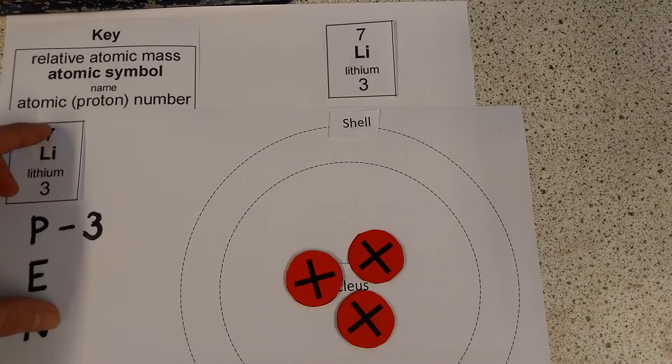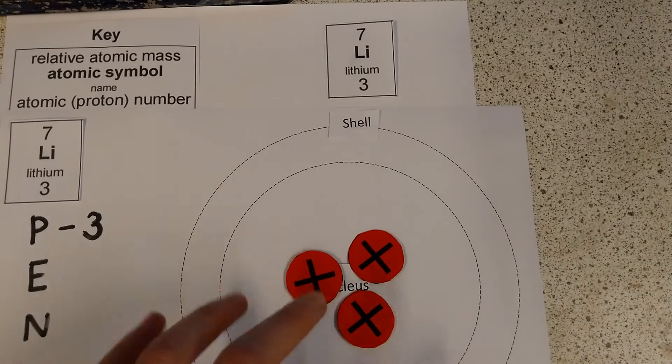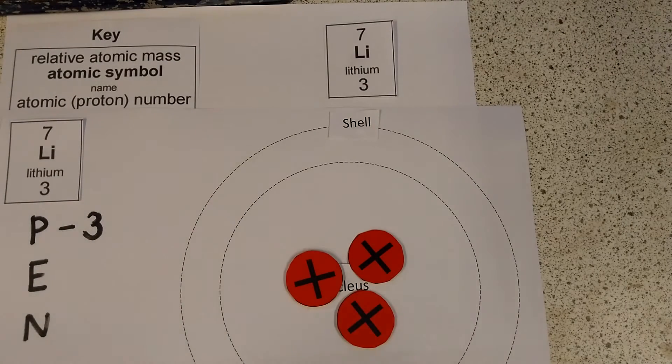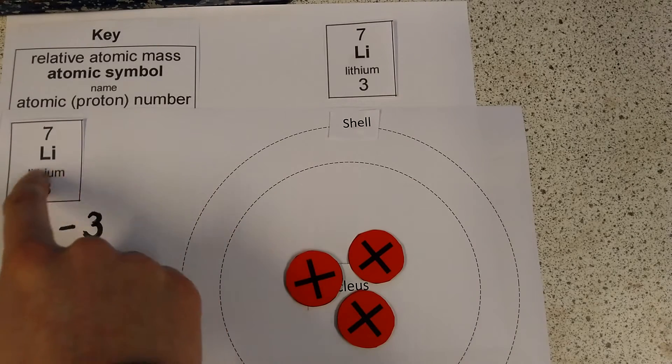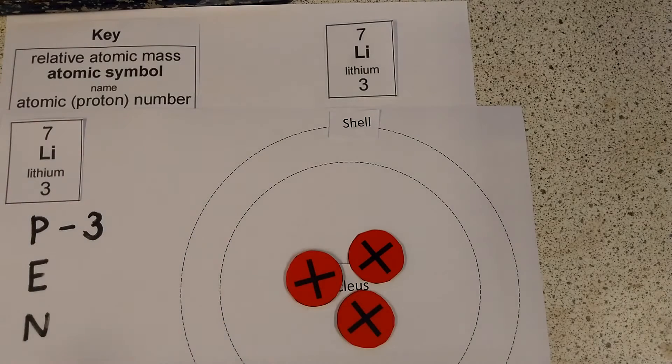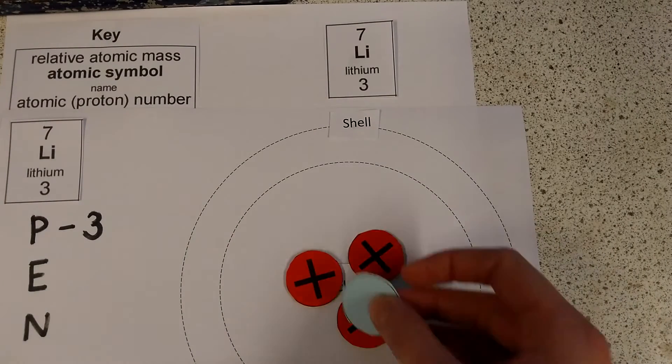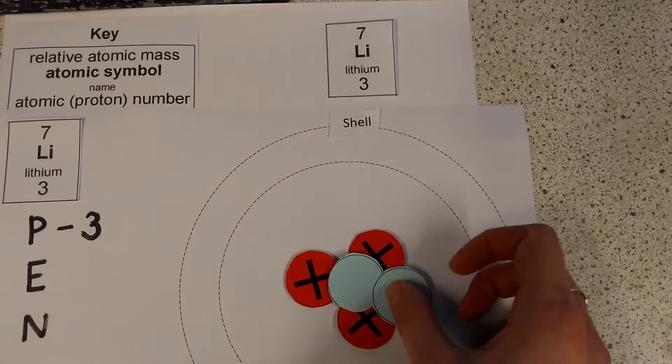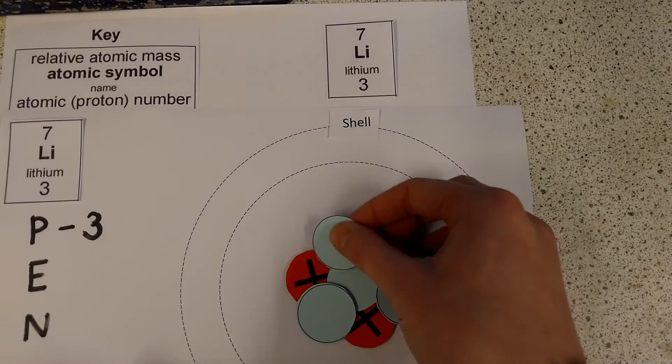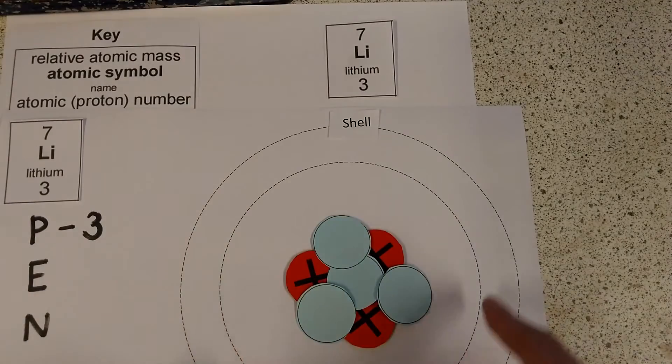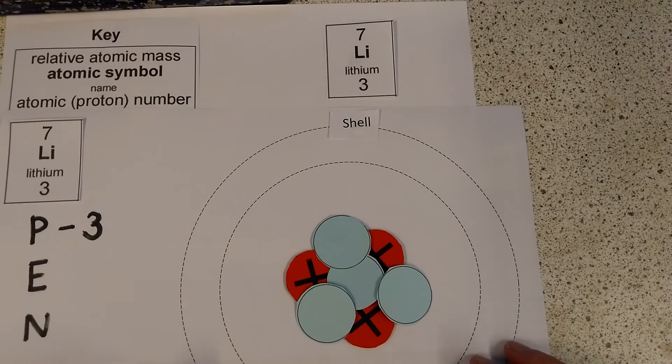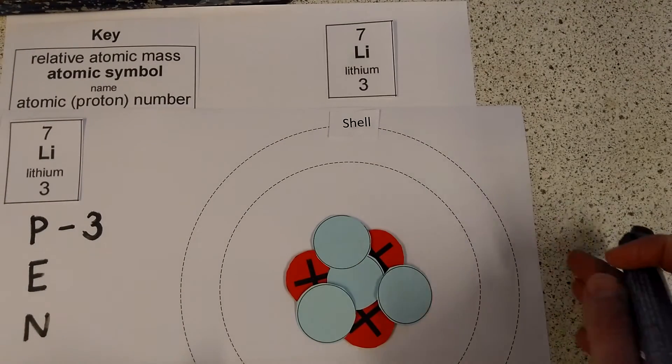So what this 7 tells me is that there are 7 things right here in the nucleus, and I already know what 3 of them are, because this proton number here was 3. So if I want to figure out how many neutrons to add, I just have to figure out how many is it going to be to take this up to 7. So if I add in 1, 2, 3, 4, I've now got 7 things in total here, and I've done that by adding 4 neutrons.